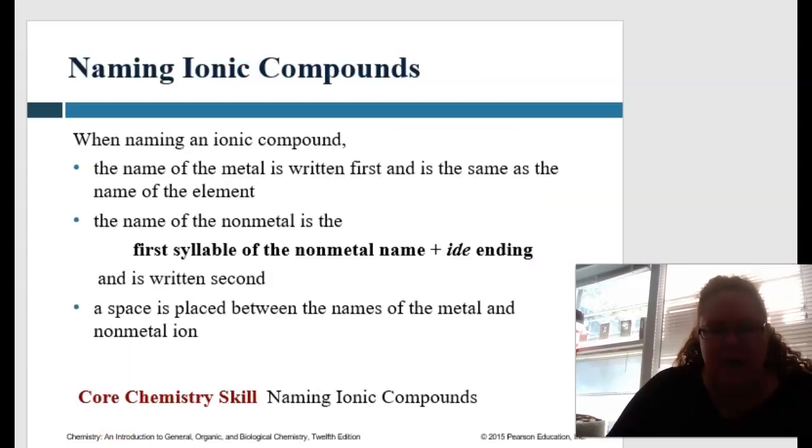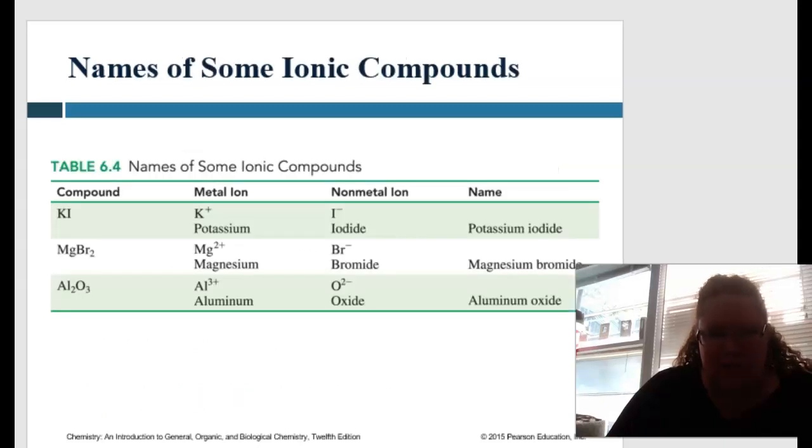So when naming an ionic compound, the name of the metal is written first, and it is the same as the name of the element. And the name of the non-metal is the first syllable of the non-metal name plus -ide as the ending, and that's written second. And so a space is placed between the names of the metal and the non-metal. And so this will make sense here in a second.